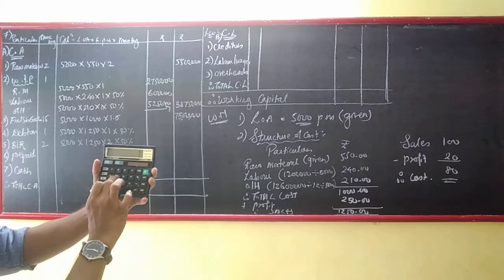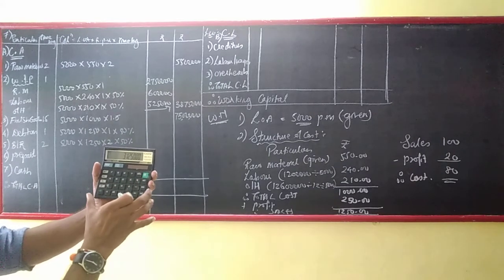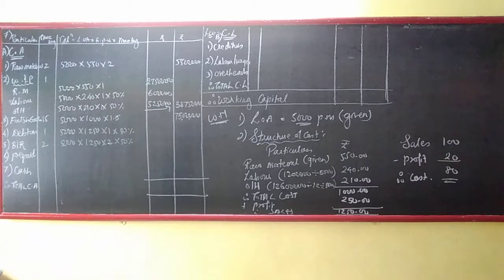5,000 × ₹1,250 × 50% = ₹31,25,000 for debtors at 2 months. Similarly, for 1 month debtors: ₹31,25,000 as well.